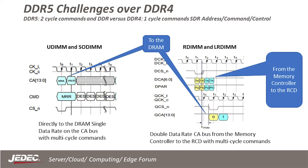Yet another complication for DDR5 is the two-cycle commands. In DDR4 we could get the entire command and column address along with the control signals on a single rising clock edge — not the case for DDR5. DDR5 has fewer signals for the command, address, and control; thus they are multiplexed and delivered on multiple clock edges. DDR4 had over 30 signals for address, command, and control, and a DDR5 sub-channel has only 11.